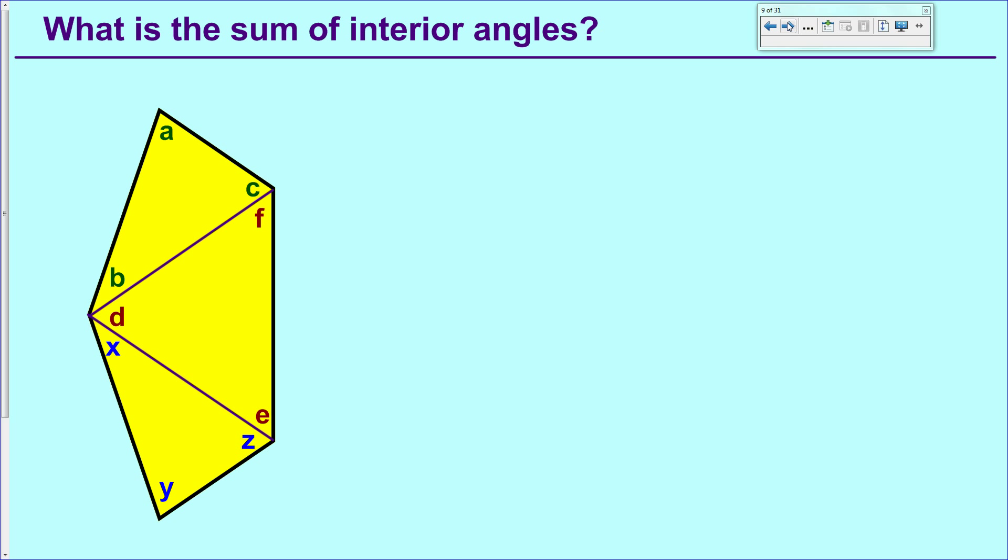Now, if I wanted to find the total interior angles of the pentagon, the large shape, I would take A plus this angle, which is C plus F, plus this angle, which is E plus Z, plus this angle, which is just Y, plus this angle, which is made up of three adjacent angles, X plus D plus B. And I would add those up together, and that would get me my total sum.